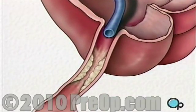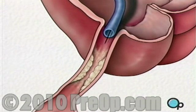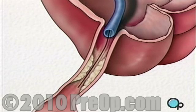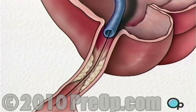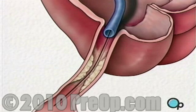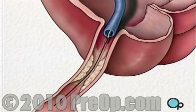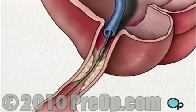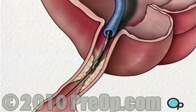Once the restricted area has been identified, a thin wire is inserted into the catheter and is guided all the way to the blocked area and then slightly beyond. This wire acts as a guide for the balloon catheter, allowing your doctor to position the deflated balloon precisely in the middle of the narrowest part of the coronary artery.